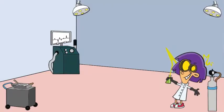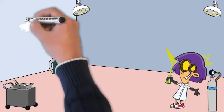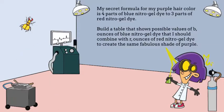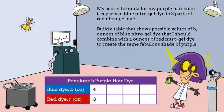Welcome to my math lab. I am Penelope and the guy on the wall is my African tiger beetle friend Harold. You caught me in the middle of mixing up some more dye for my beautiful purple hair. My secret formula for my purple hair color is four parts of blue nitro gel dye to three parts of red nitro gel dye. Build a table that shows possible values of B ounces of blue nitro gel dye that I should combine with R ounces of red nitro gel dye to create the same fabulous shade of purple.